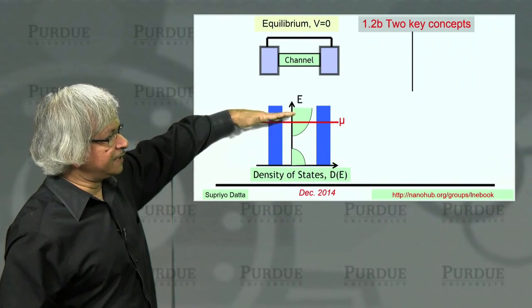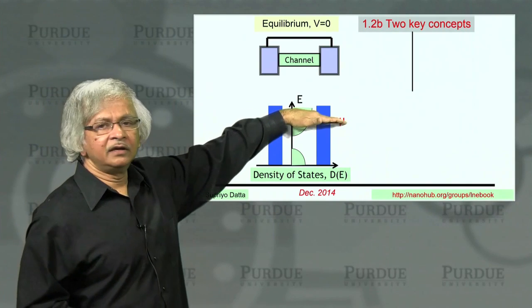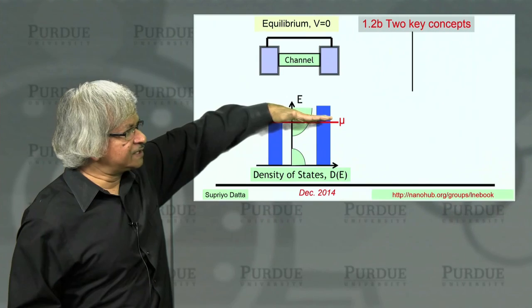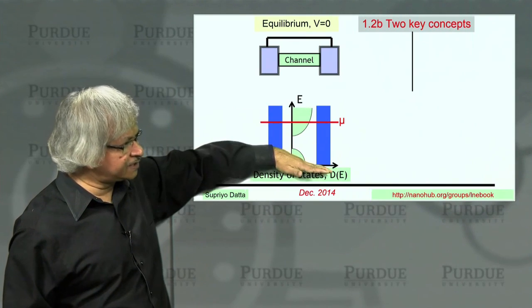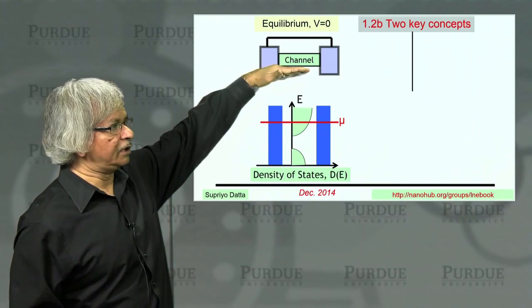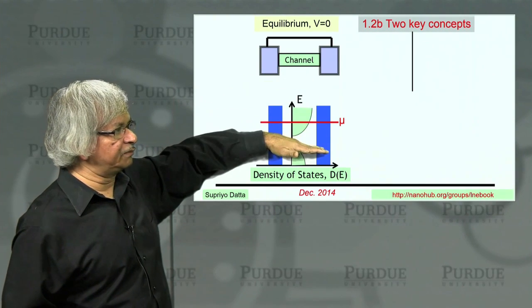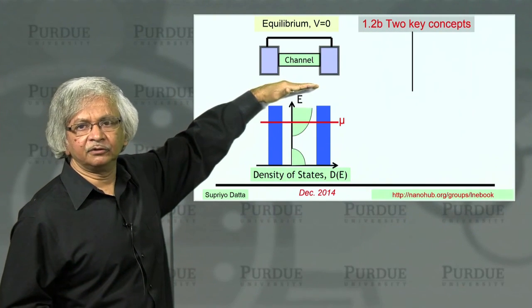So there is this level then, which you call the electrochemical potential or the Fermi level, which separates all the filled states from the empty ones. So if you're at zero temperature, everything below it would be filled. Everything above it would be empty.